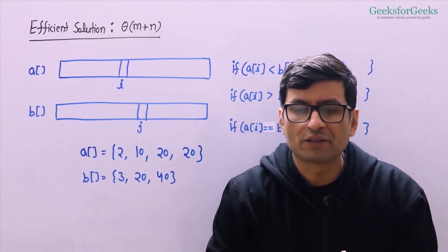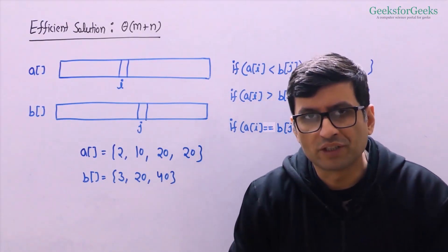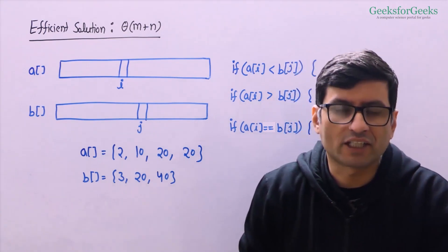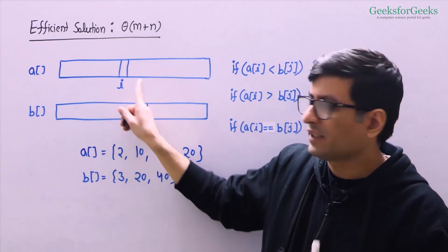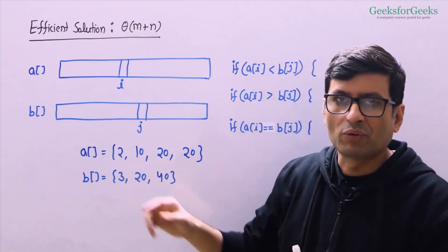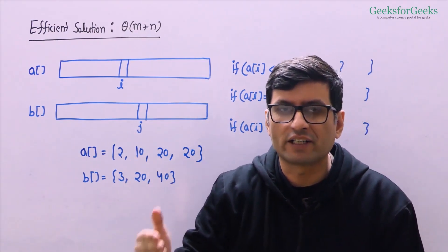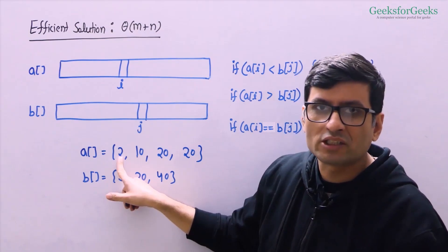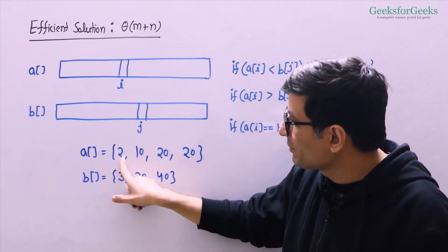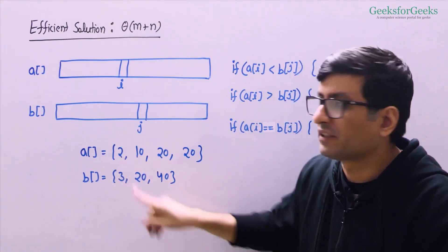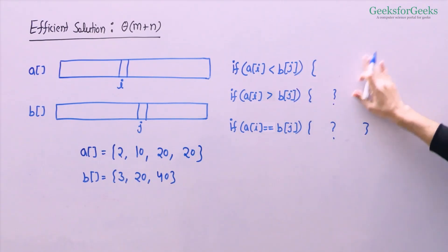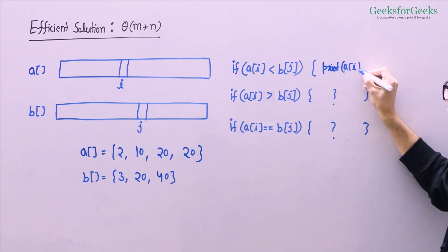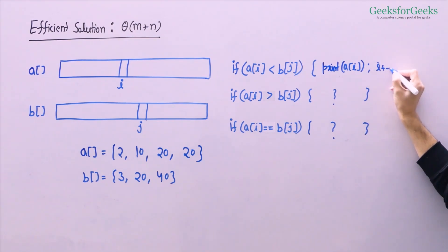Let us now talk about the efficient solution that works in O(m + n) time. We are going to follow a process similar to the merge function of merge sort — traversing both arrays simultaneously using index i for array a and index j for array b. Like merge sort, we compare a[i] and b[j]. If a[i] is smaller, we print a[i] and move ahead in array a by doing i++.